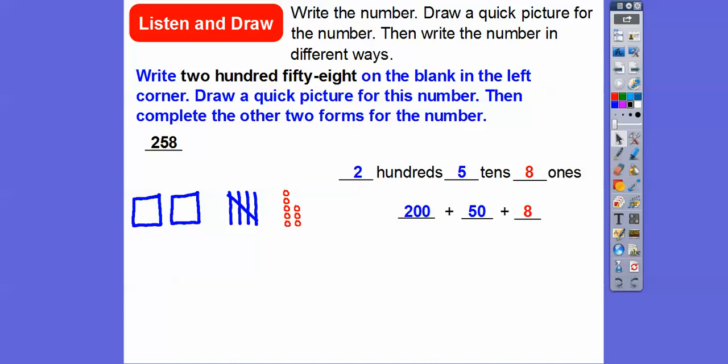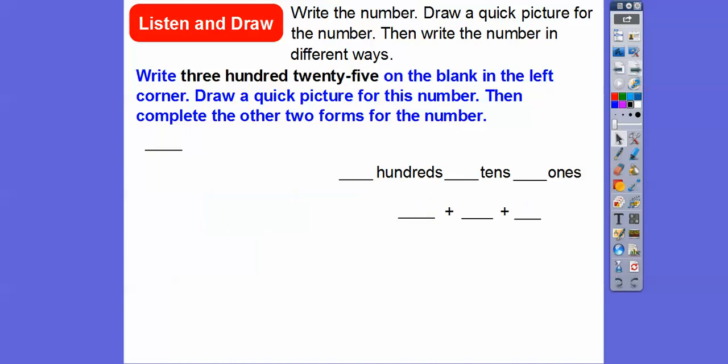We're going to go backwards a little bit later on in this lesson, and we're going to change this 258 to represent this right here. Here's 200, here's 50, here's 8, and so when we add those together, we get 258.